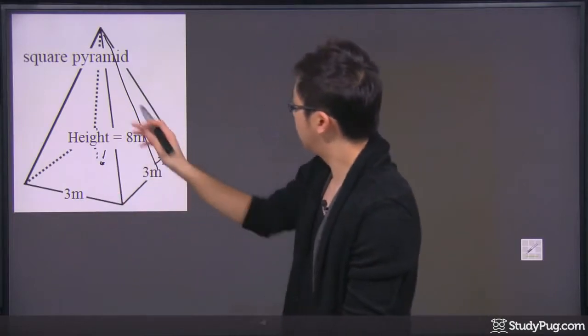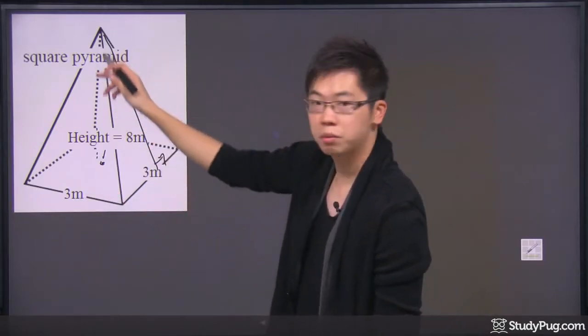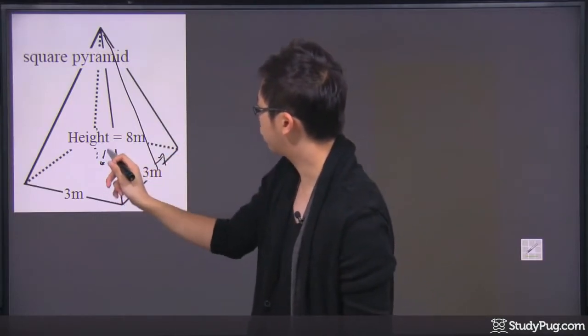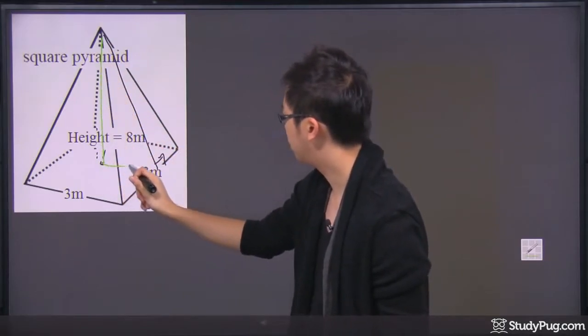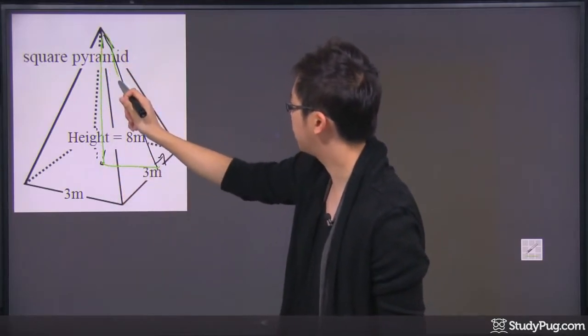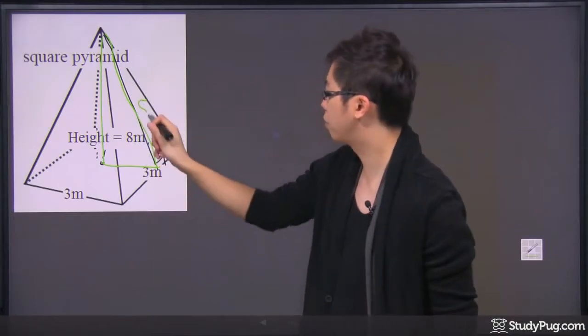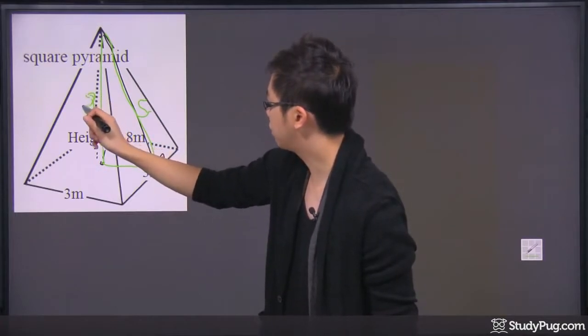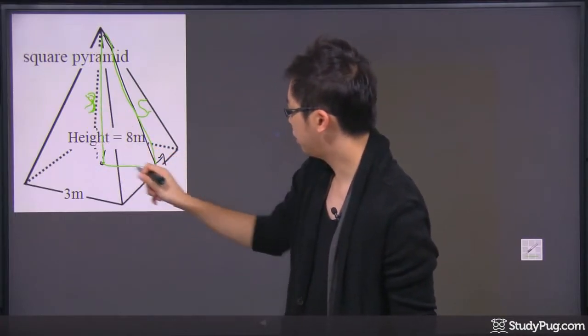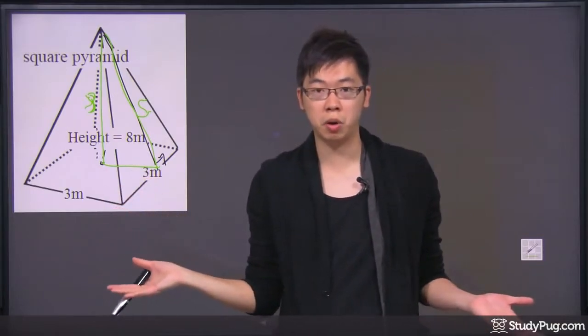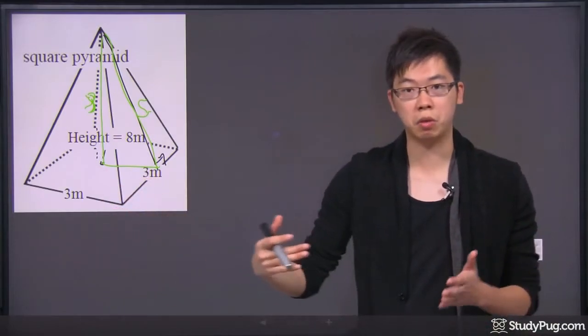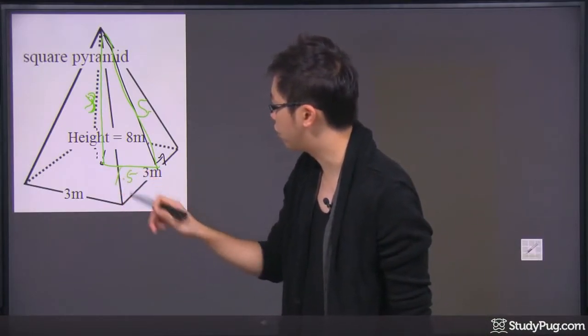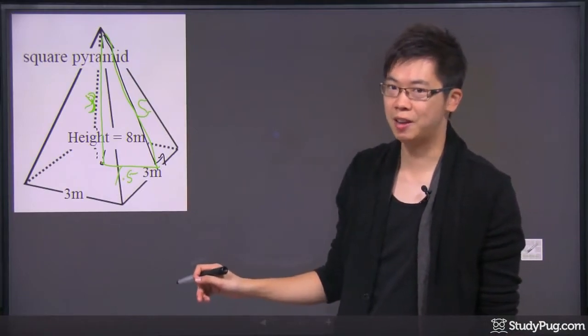So, imagine that this is like a right triangle right here. Actually, the triangle is actually here. Let me draw the green line right there. This is the S that we're trying to figure out. So, the center piece is 8, because that's where the height is. And this piece right here, because the bottom part of the base of the pyramid is just 3 meter by 3 meter, if you cut it in half, it's 1.5. And we're trying to find the S, which is the slanted side.